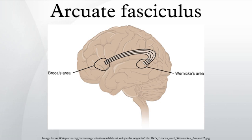Evidence for the role of the arcuate fasciculus in language use is best represented by conduction aphasia, caused by damage to the inferior parietal lobule that extends into the subcortical white matter and damages the arcuate fasciculus. This type of aphasia inhibits the patient from repeating unfamiliar sounds.